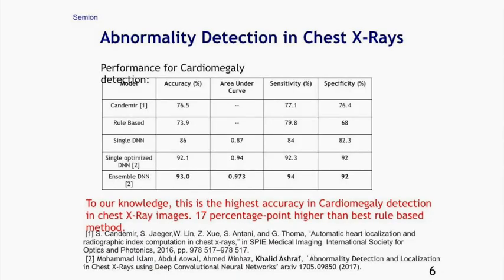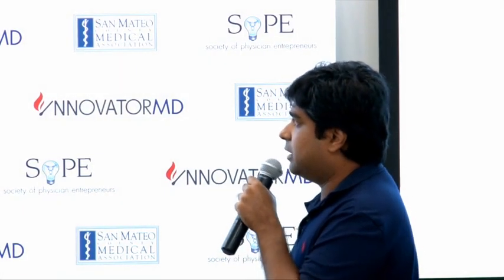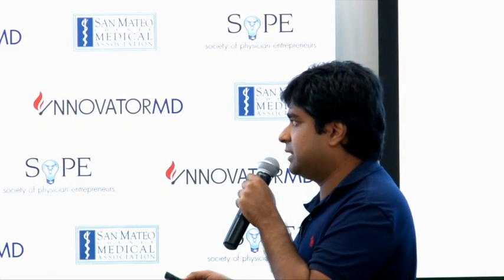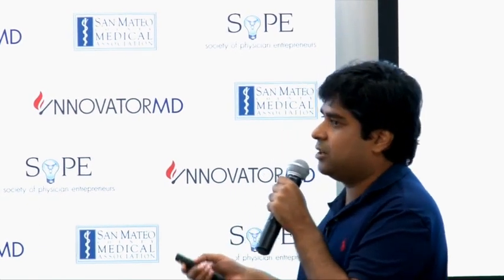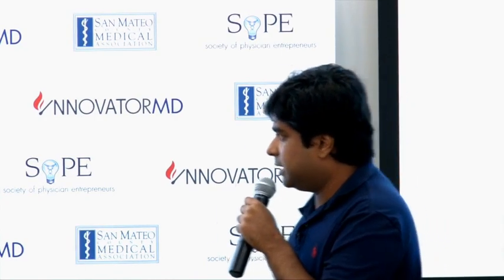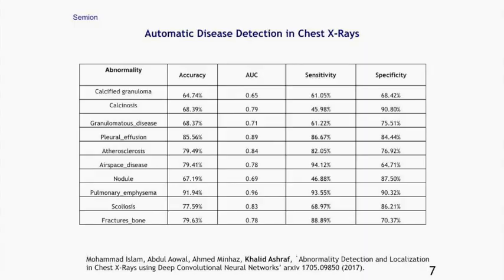Here is one example of detecting cardiomegaly, which is basically an increase in the size of the heart. Our results show a 17 percentage point higher accuracy compared to the best results in the literature. And not only that disease — we detect about 20 or so abnormalities on chest x-ray.